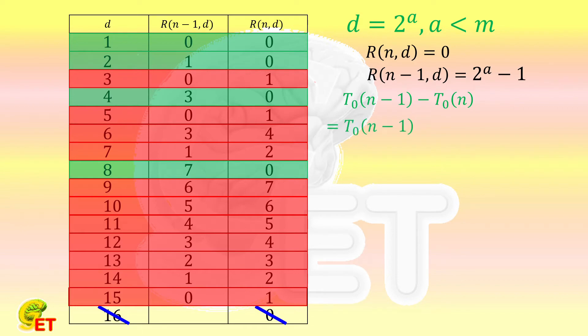That is, when a is equal to 0, R(n-1,d) is equal to 2 to the 0th power minus 1. When a is equal to 1, R(n-1,d) is equal to 2 to the 1st power minus 1, until the maximum a, that is m minus 1. R(n-1,d) equals 2 to the power of m minus 1 minus 1. That is the summation of a geometric sequence, whose first item is 1, common ratio is 2, and number of items is m. And then minus m.